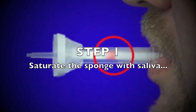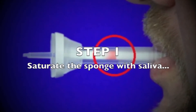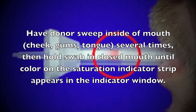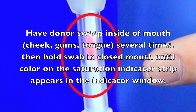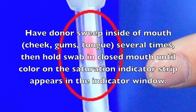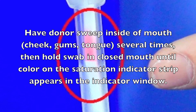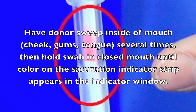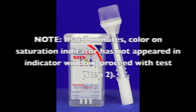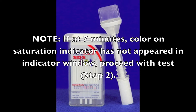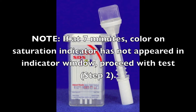Step 1: Saturate the sponge with saliva. Have the donor sweep the inside of their mouth, switching around from the cheeks, gums, and the tongue several times. Then hold the collection swab in the mouth until the color of the saturation indicator strip appears in the indicator window. If at 7 minutes the color on the saturation indicator has not appeared in the indicator window, proceed with Step 2.